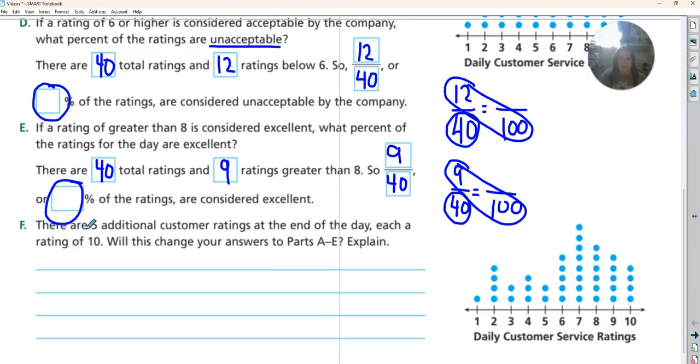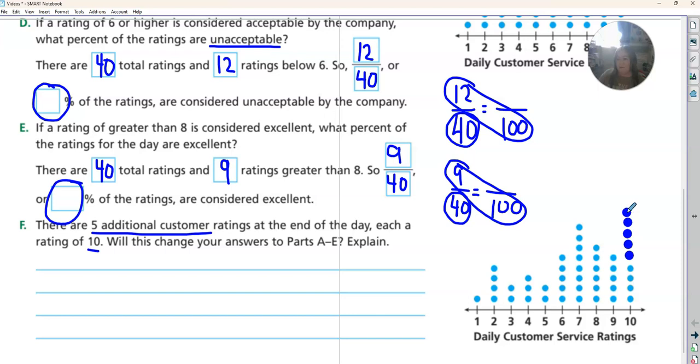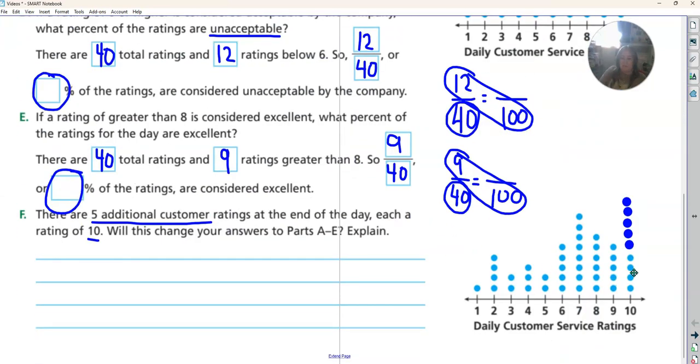Now we have five additional customers at the end of the day, and each gave a rating of 10. So they got five new 10s: one, two, three, four, five. Will this change our answers? Our answer for A was which was most common. So our answer for A, now which one's the most common? It would change to 10.